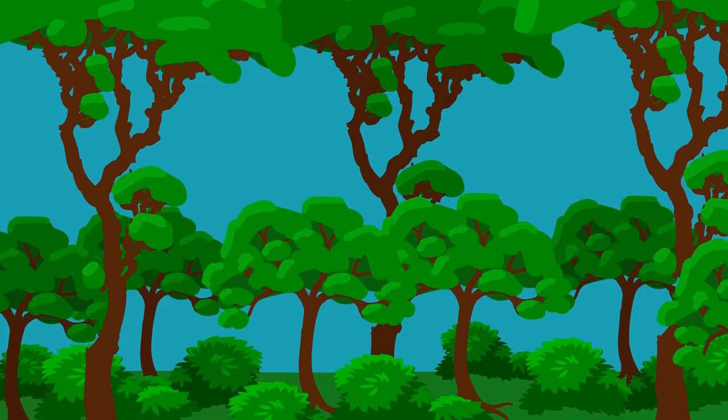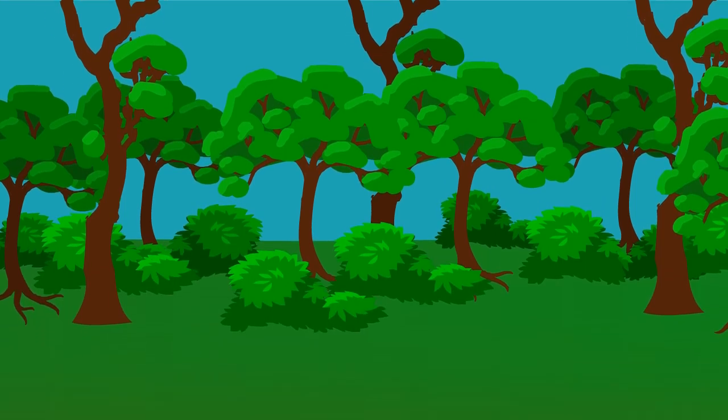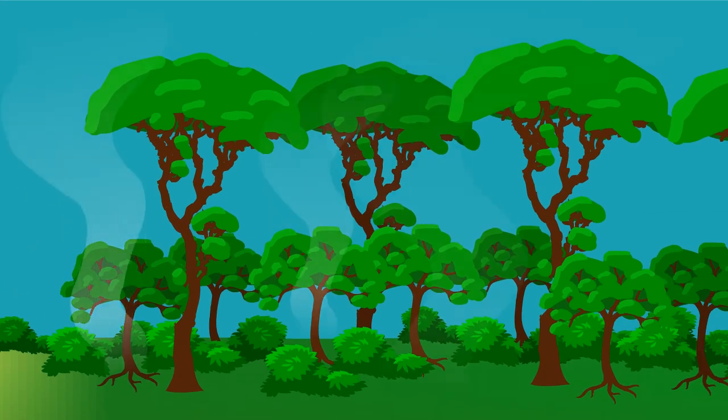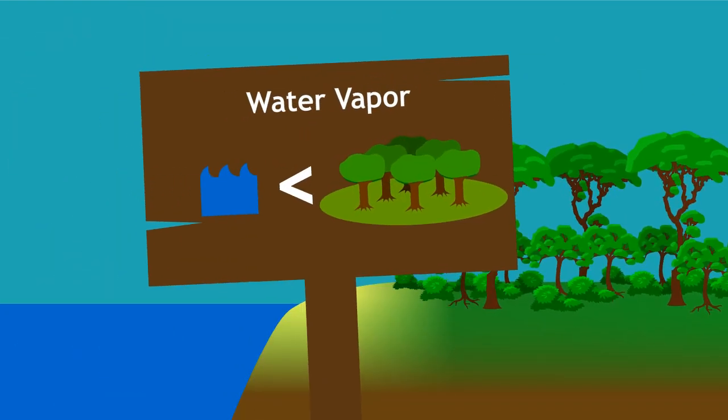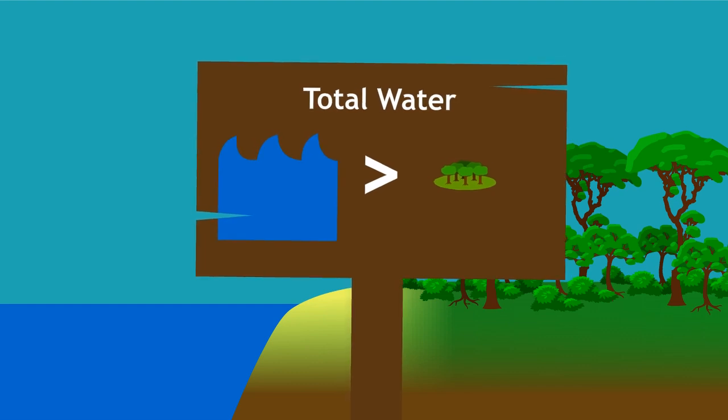Multiple canopy layers, shrubs, moisture-laden ground are all full of water, which transpires or evaporates entering the air. As a result, we find much more water vapor in the forest, even when there is less total water.